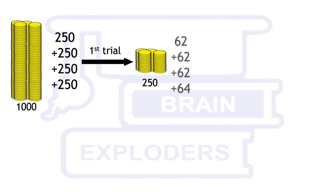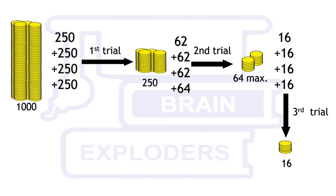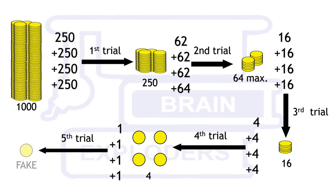After first trial we have 250 coins in which one is fake. After second trial we have 64 coins at most in which one is fake. After third trial we have 16 coins. After fourth trial we have 4 coins and after fifth trial we get the fake coin and this was our solution.